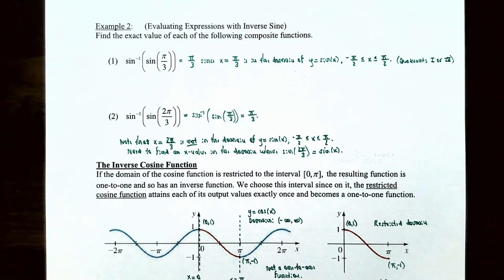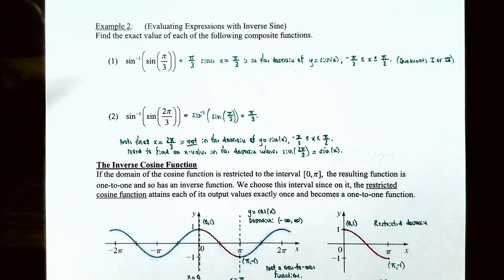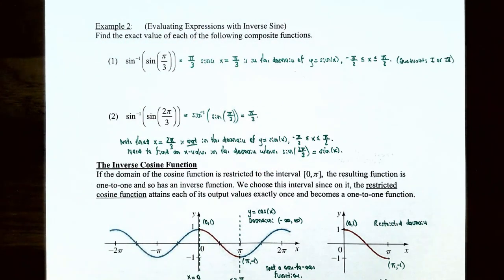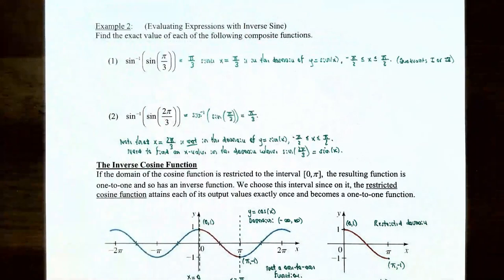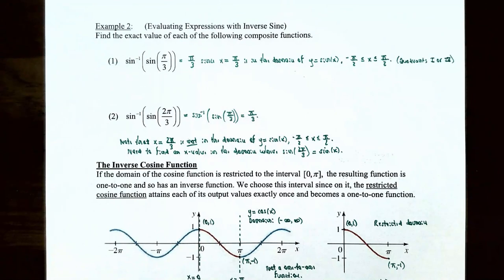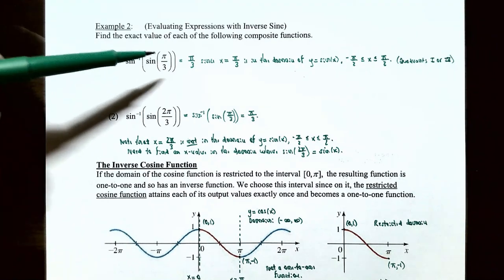Example two: evaluating expressions with the inverse sine function. Find the exact value of each composite function. Number one: sin⁻¹(sin(π/3)). Since π/3 is actually in the domain of the restricted sine function — it is in quadrant 1 and between −π/2 and π/2 — the inverse sine and sine cancel each other out, giving π/3 as the output.